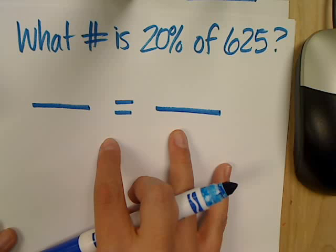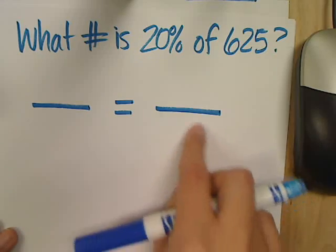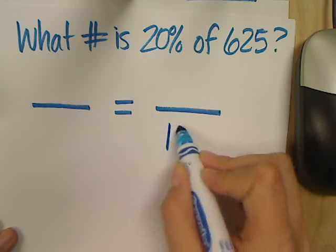Are you writing this down, Nathan? Yes. Okay. So, what always belongs in this right bottom corner? 100. 100.